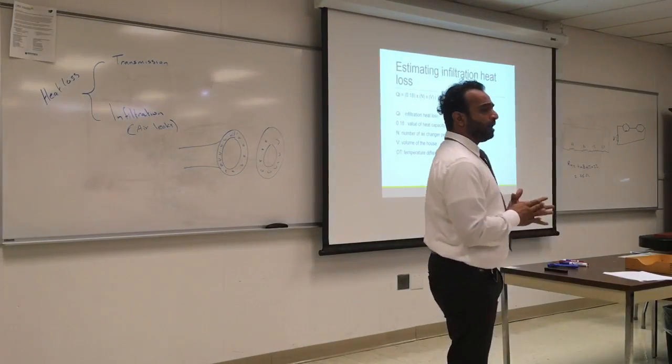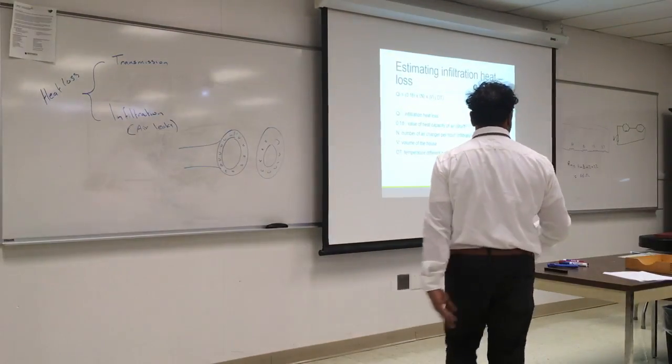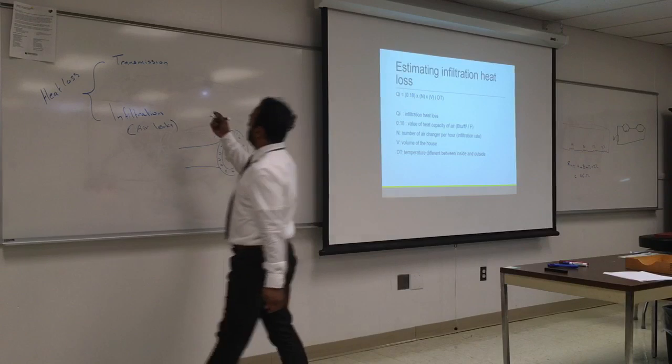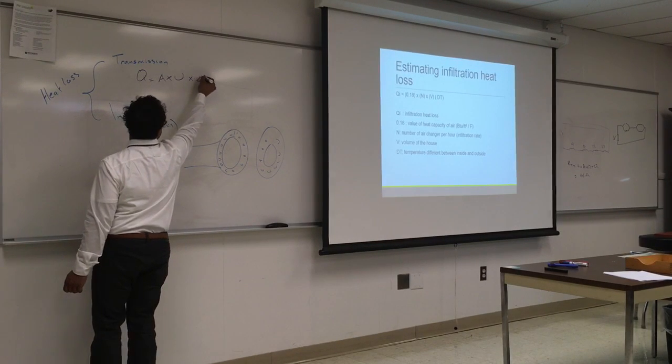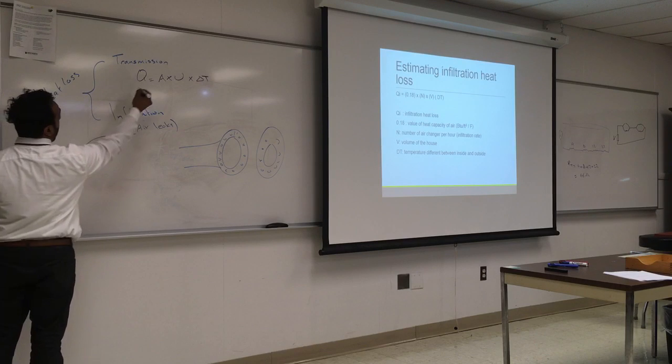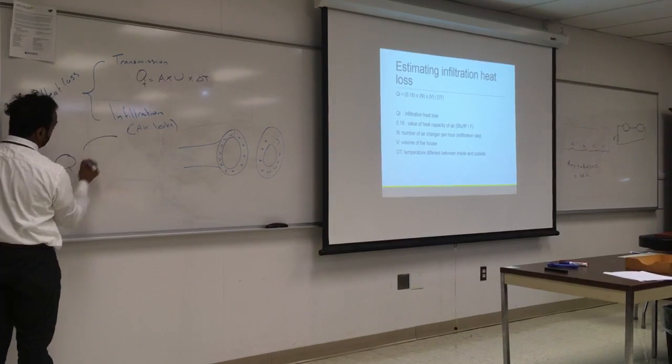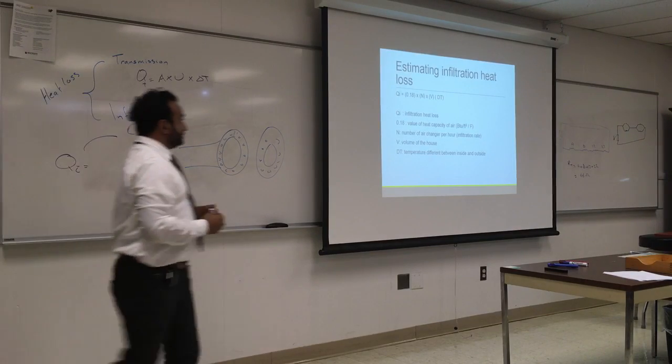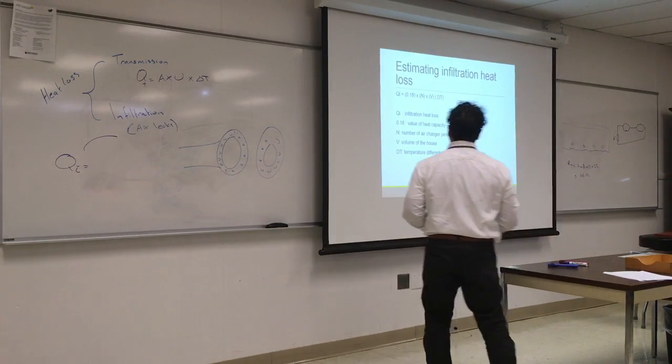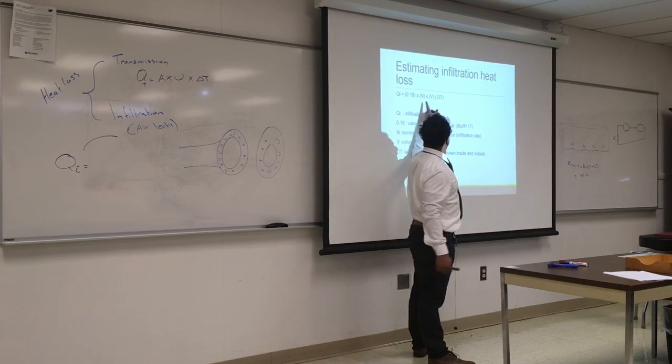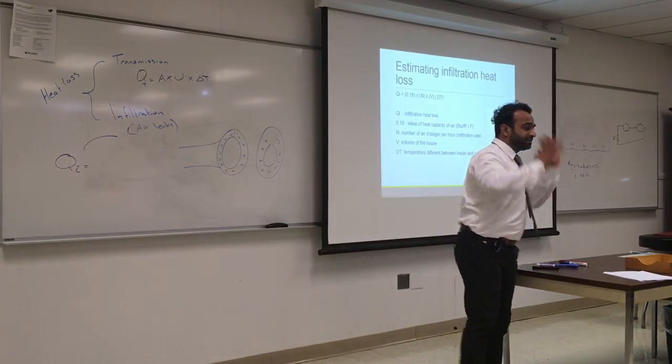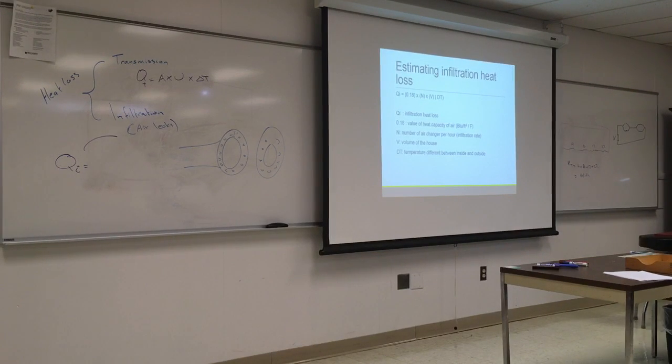I will explain this a little bit and we'll do a couple of problems on Friday. So we did a lot of equations on transmission and we said Q equals area times U times delta T. So for here we have the same thing, we're going to call this QT for transmission, this is QI for infiltration. What is delta T? We know that. V is the volume of the room. And N is the exchange rate. 0.18, it's a number that's never going to change. That's the property of air, how much the air holds heat.